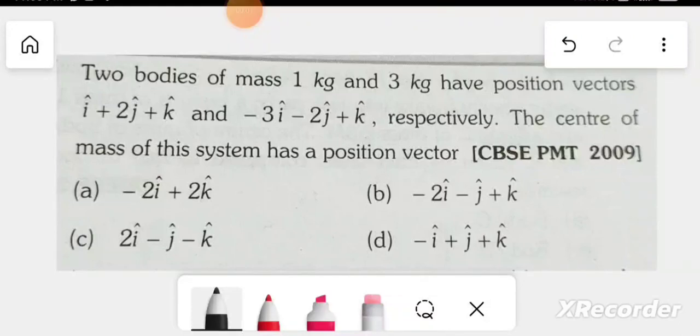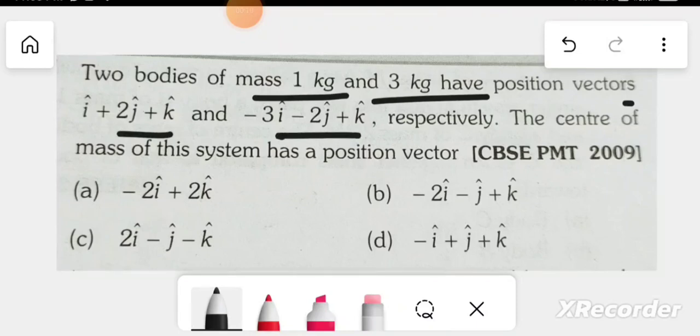Two bodies of mass 1 kg and 3 kg have position vectors respectively. The center of mass of the system has a position vector.